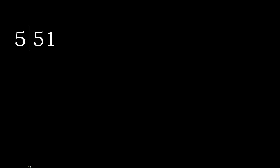51 divided by 5. 5 does not go into 5 more than once. 5 multiplied by which number is nearest to 5 but not greater? 5 multiplied by 2 is 10, which is greater. 5 multiplied by 1 is 5, which is not greater. 5 minus 5 is 0.